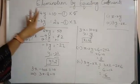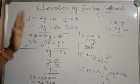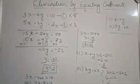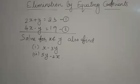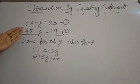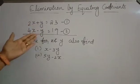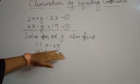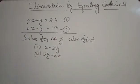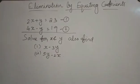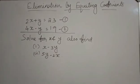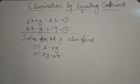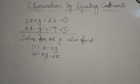Here is a question for you: 2x plus y equals 23 and 4x minus y equals 19. Solve for x and y, and also find x minus 3y as well as 5y minus 2x. This is the method of elimination by equating the coefficients. In the next class, let's study the method of cross multiplication. Thank you.